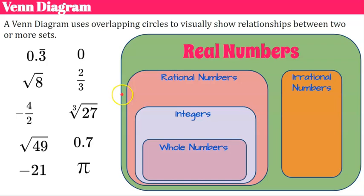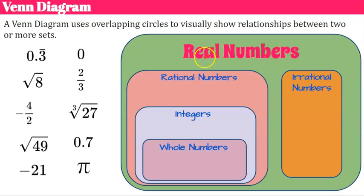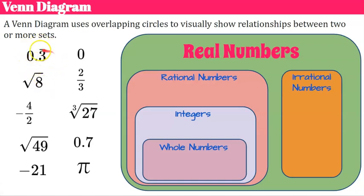Here we have a Venn diagram — all numbers placed in it are real numbers. Within the real number family, the first decision is whether a number is rational or irrational. Our first value is 0.3 repeating. All repeating decimals can be written as fractions, so it's a rational number. In fact, 0.3 repeating can be written as the fraction one-third.